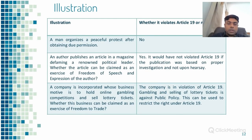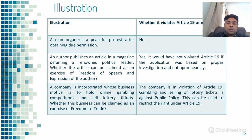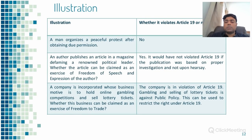For example, if a man organizes a peaceful protest after obtaining due permission, it does not violate Article 19. If an author publishes an article in a magazine defaming a renowned political leader, it would not violate Article 19 if the publication was based on facts and proper investigation and not on hearsay. However, if a company is incorporated whose business motive is to hold online gambling competitions and sell lottery tickets, and if gambling is prohibited or against public policy, then the company is in violation of Article 19.